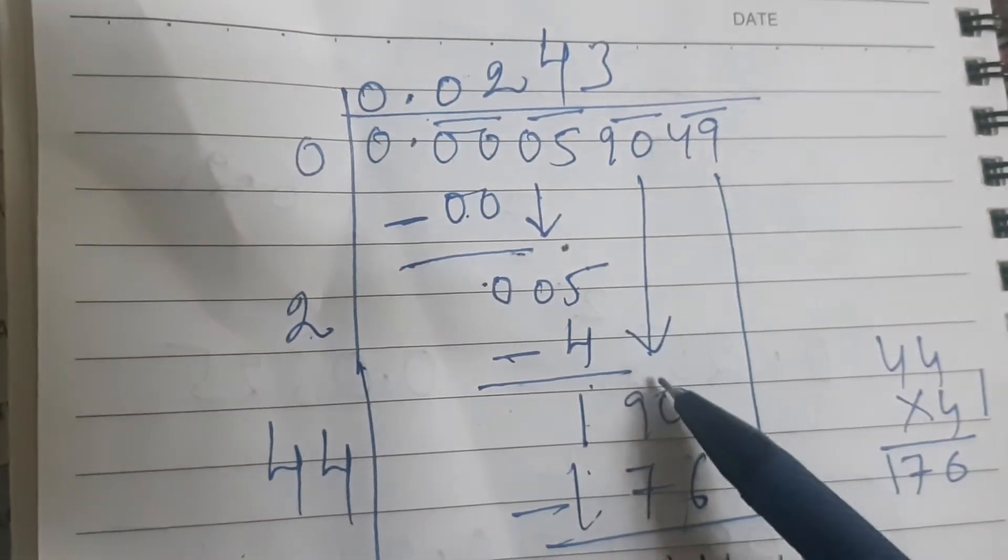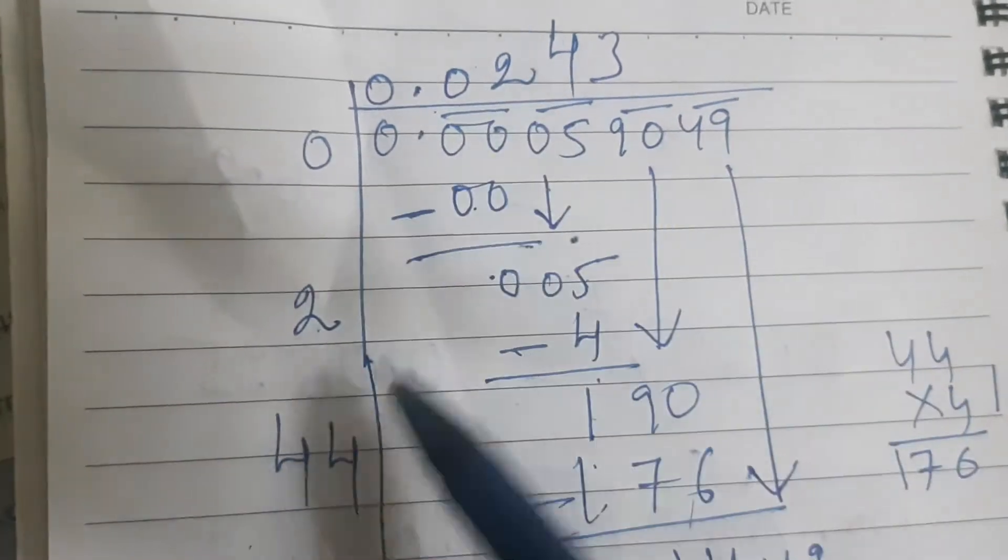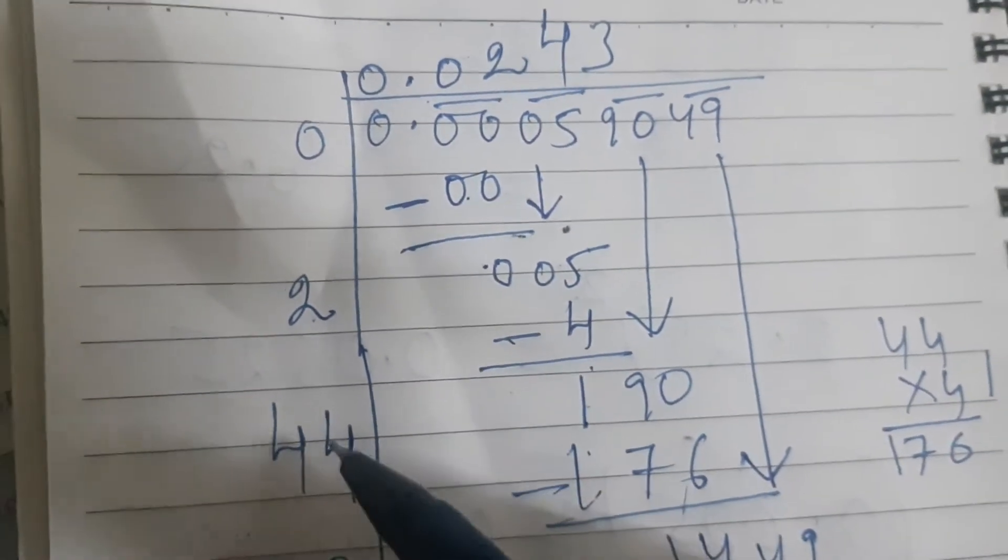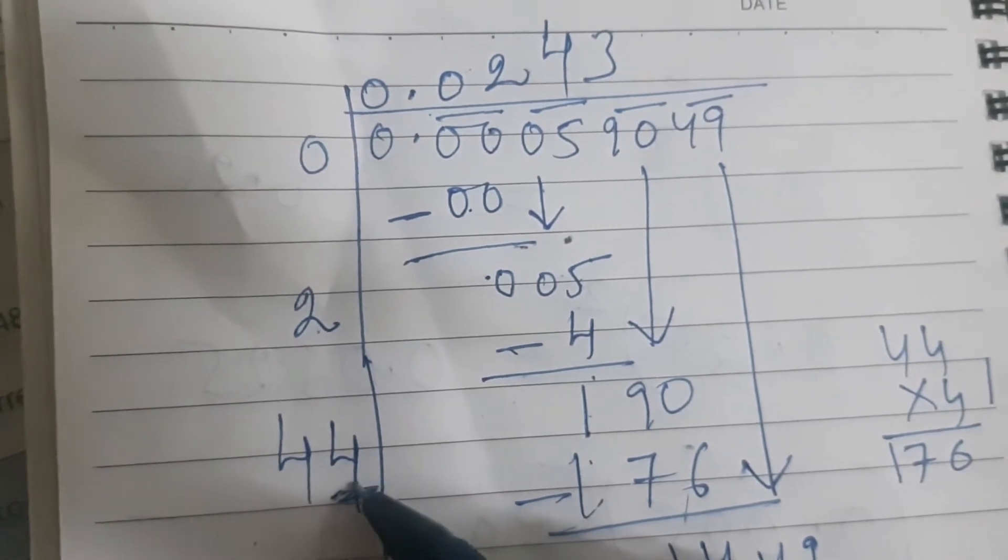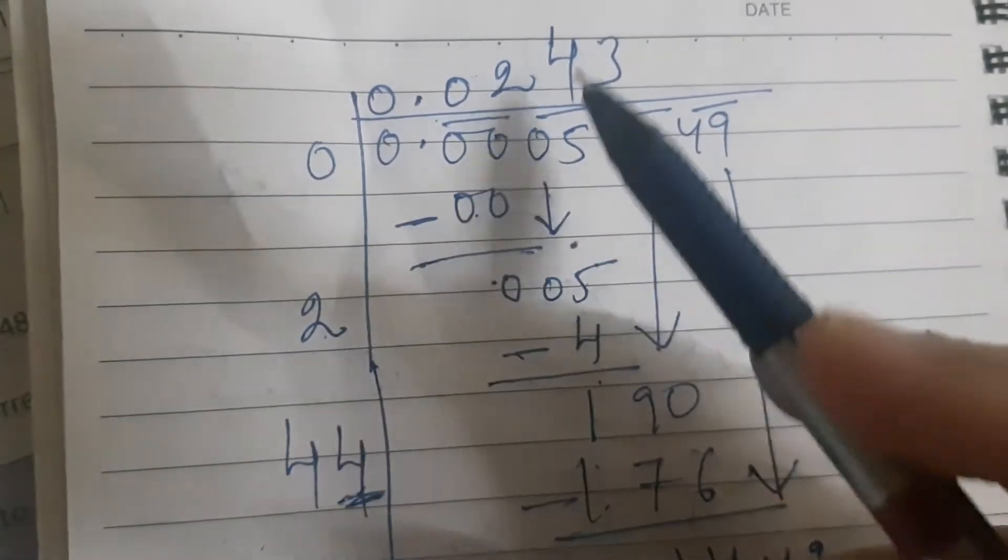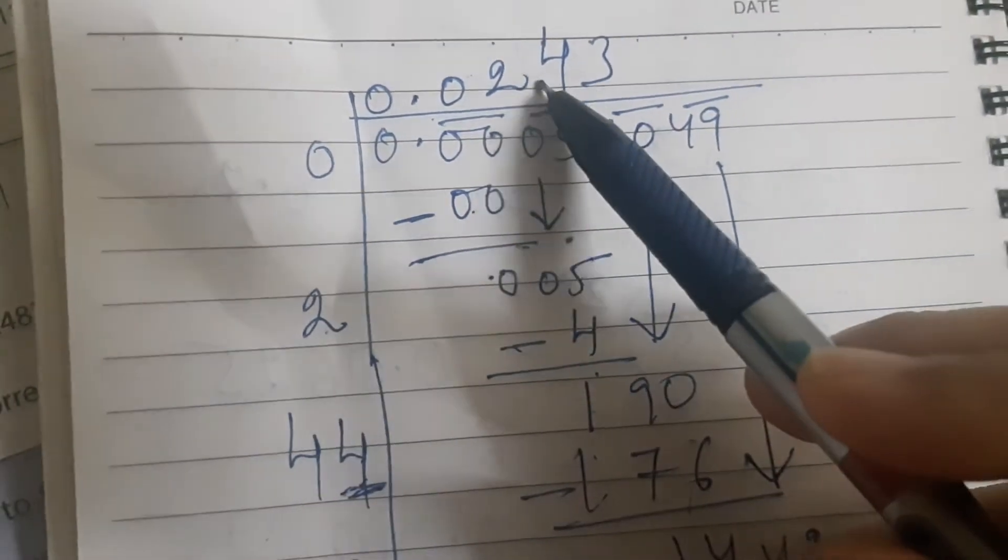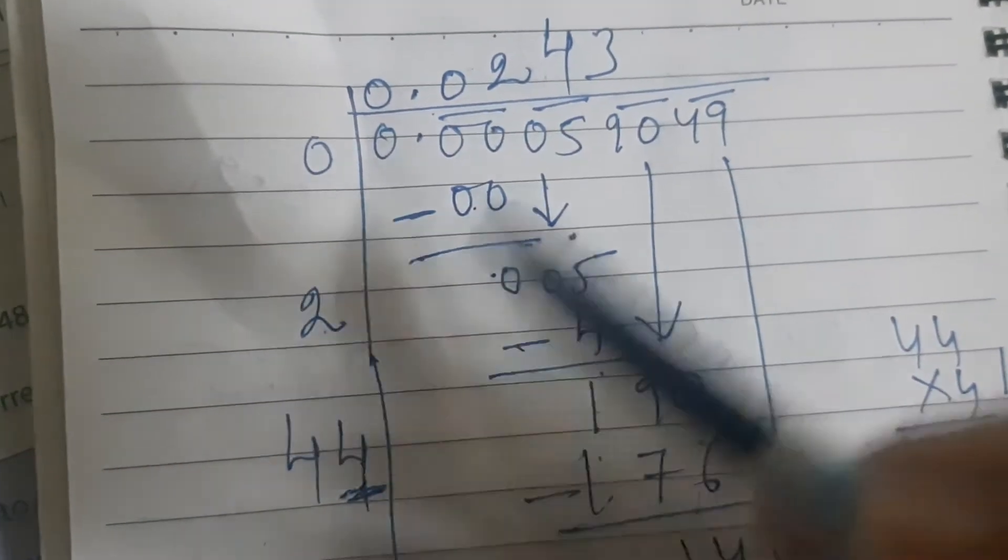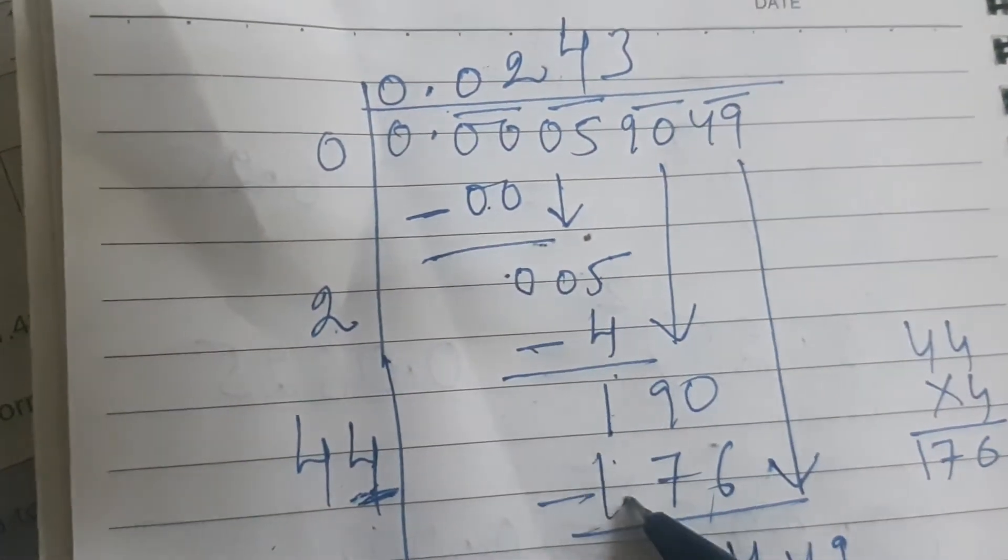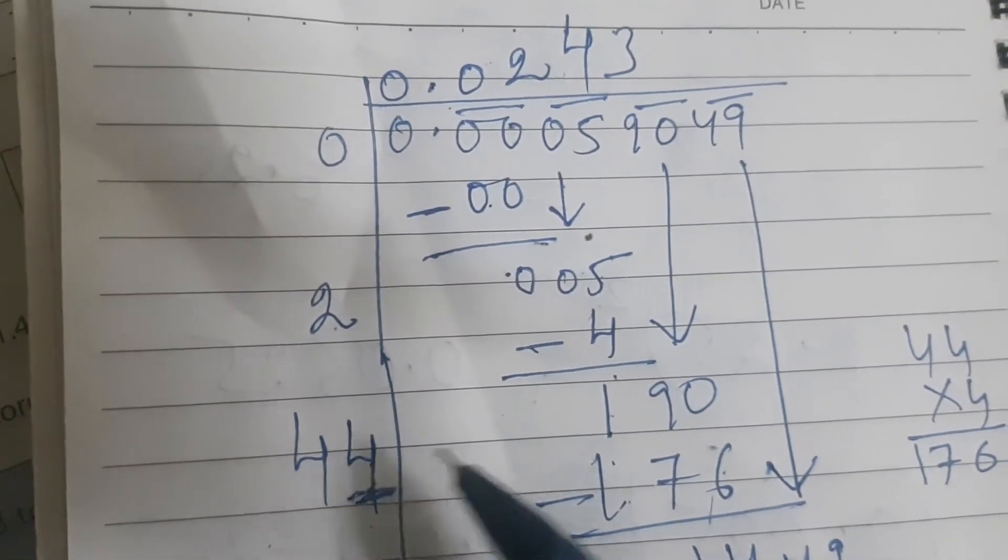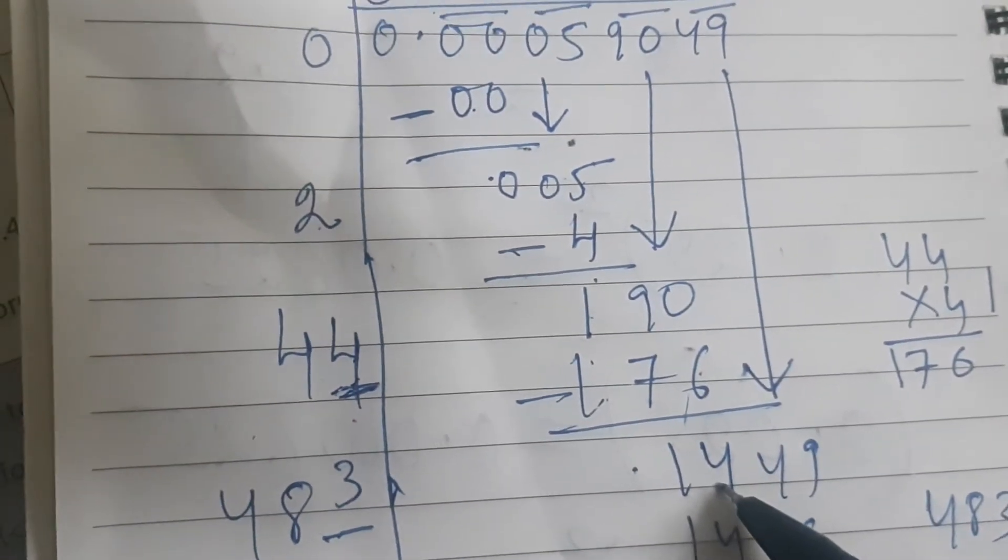Now copy down the next period, which is 90. 2 plus 2 gives me 4. So I have to think of another digit, which will be multiplied by, so number become 44, for example, which will be multiplied by same digit, which I am placing over here. So 44 multiplied by 4 gives me 176. So it is 190 minus 176. So it gives me 14.